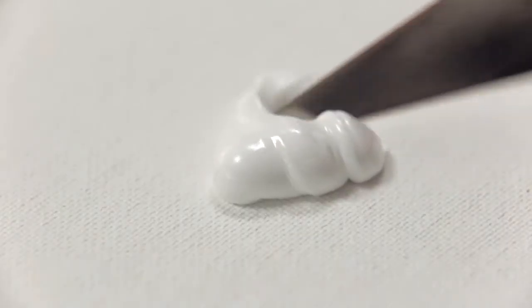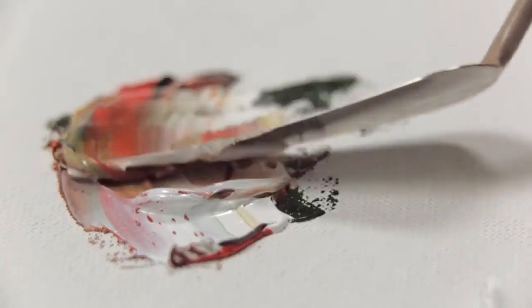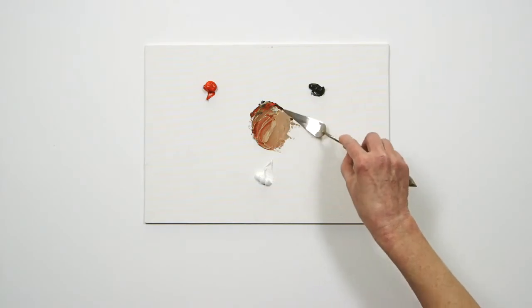Next I'll add a bit of white. You can see that it makes a rich, warm grey. Try not to over-mix, as you'll lose the variety of potential hues within the greys.